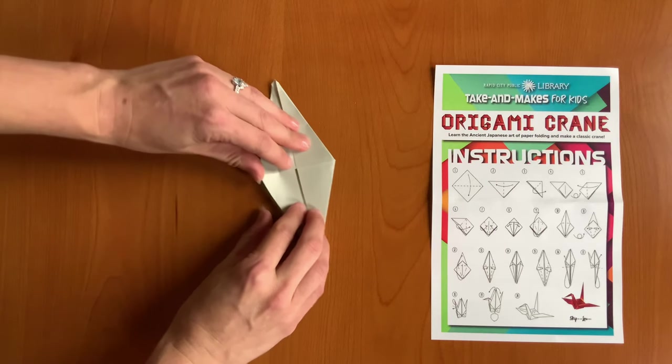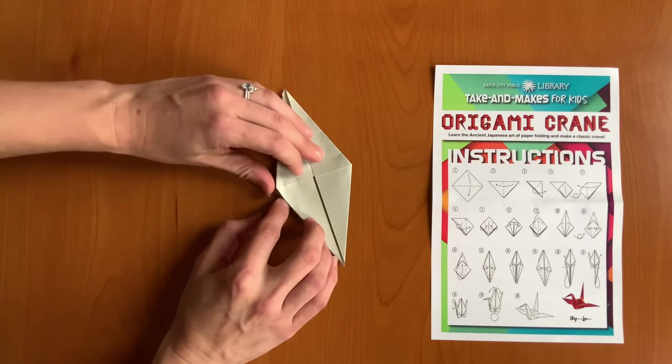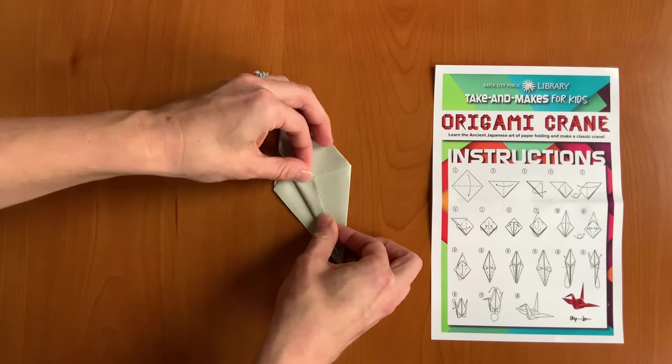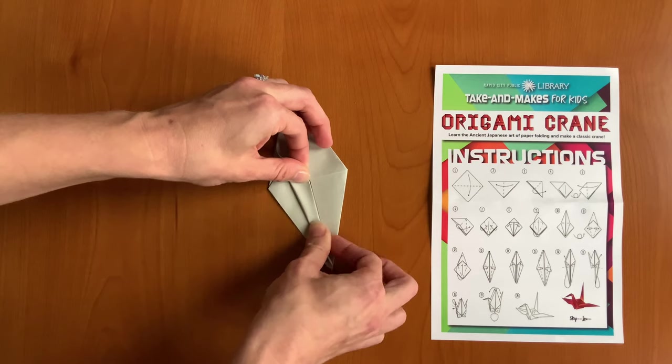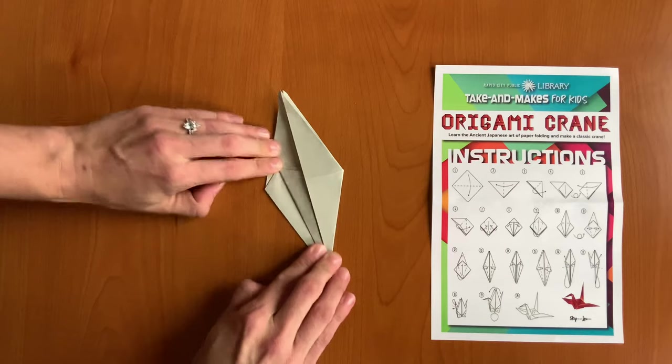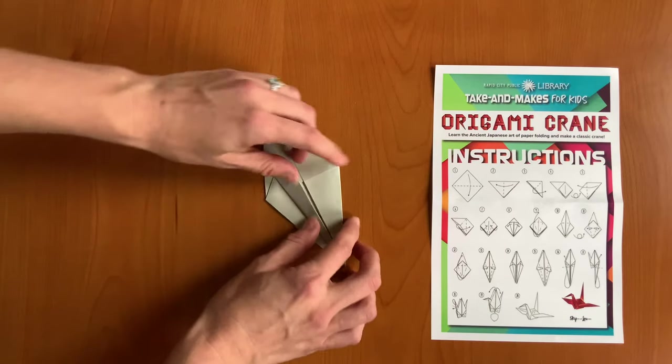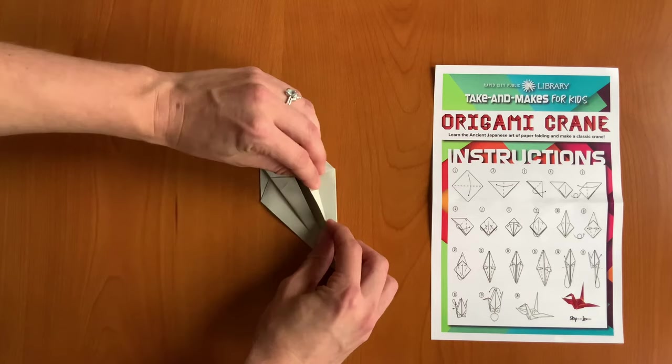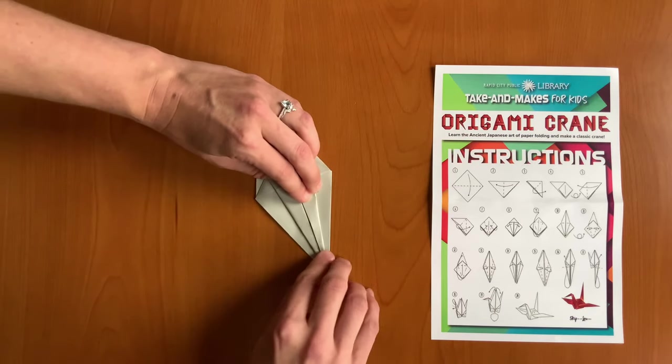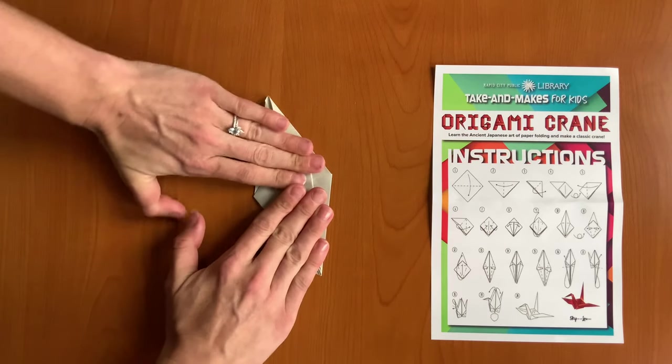Next, we're going to, on the left-hand side, there are two layers, you'll notice. We're going to take just one layer and do the same type of fold that we did before, bringing the edge to the middle, just like that. And we're going to do the same thing on the other side as well. So taking just the top layer, bring that in, and squish it down.